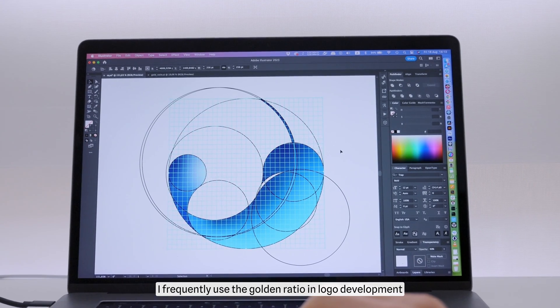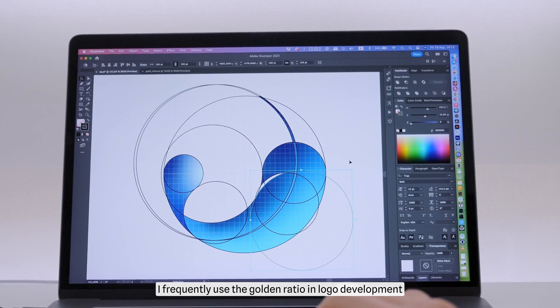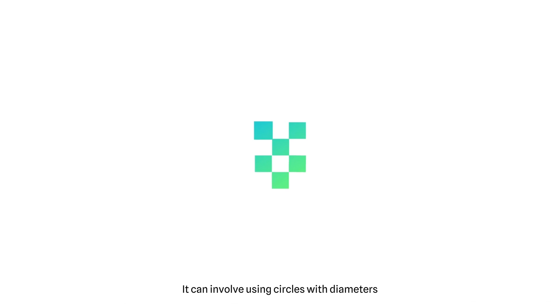I frequently use the golden ratio in logo development. It can involve using circles with diameters in a specific sequence, or constructing the logo within the overall proportion of the golden ratio.